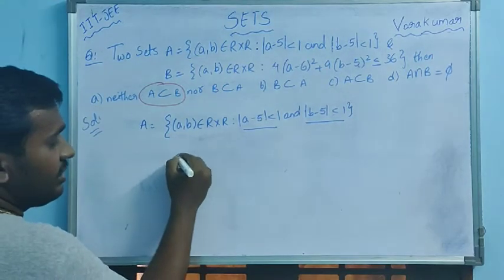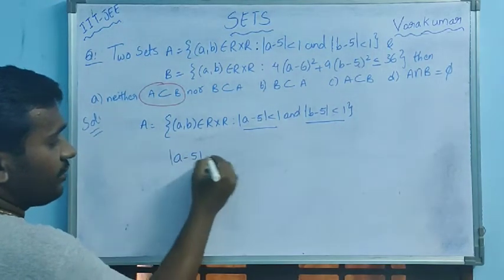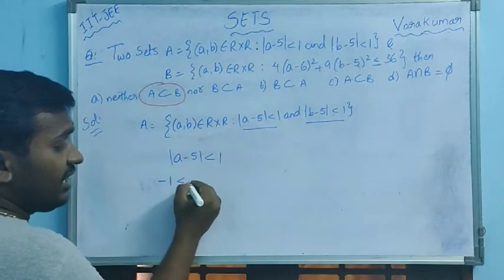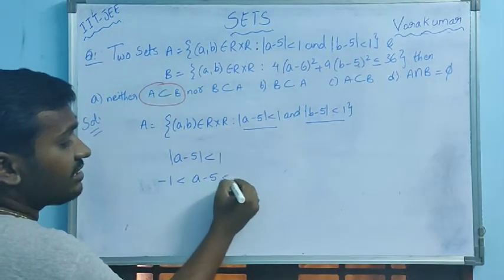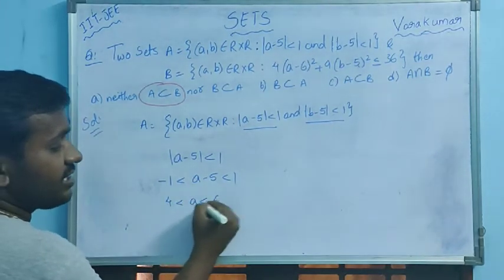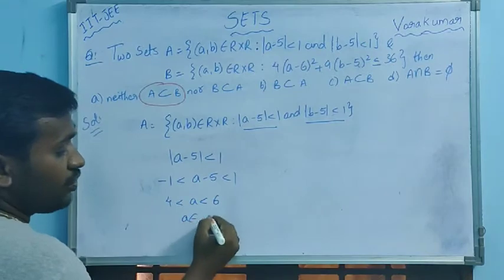Adding 5 on both sides, 4 < a < 6. So a belongs to open interval (4,6).